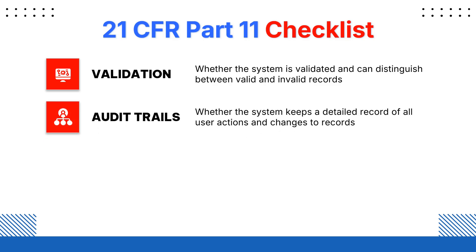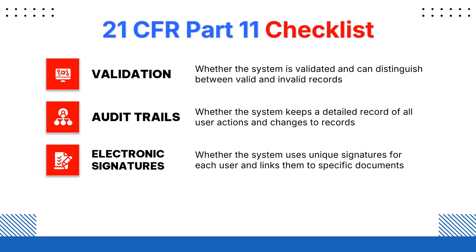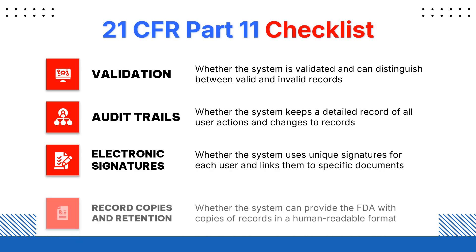Second is audit trail. Whenever a system keeps a detailed record, there are changes in the record, and each user action or change in the record needs to be verified by the audit trail — the source of the data change needs to be traced. Next is electronic signature: whenever a system uses a unique set of signatures, each user needs to have a different ID for the electronic signature, and that should be a specified link to the specified document.